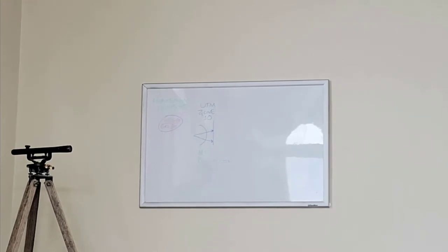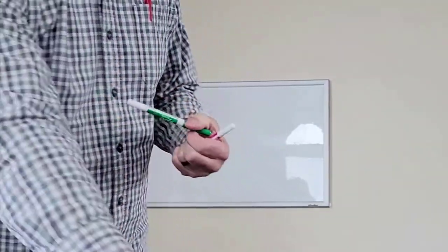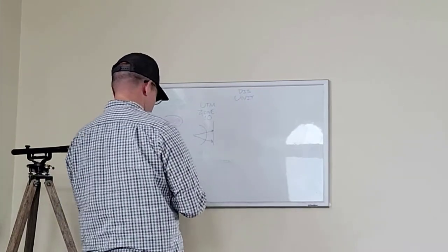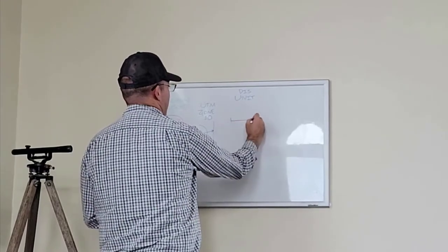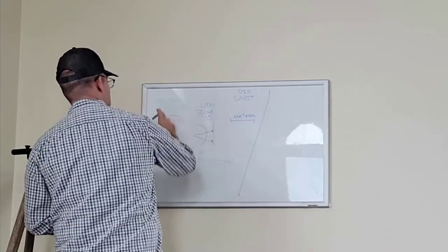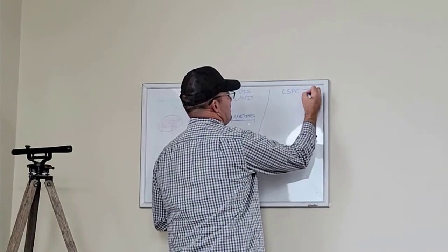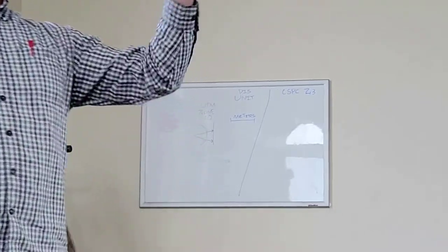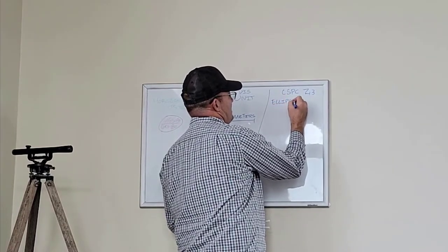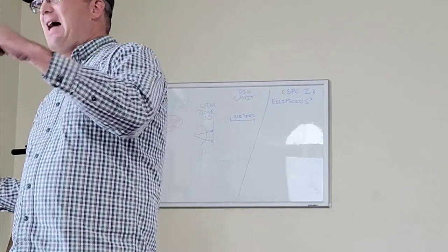So what QGIS is doing when it sees your image is in UTM Zone 10 — there's another part to this. You've also got to have some kind of distance unit. In UTM Zone 10, the distance unit is meters. Now QGIS knows you want to go from UTM Zone 10 to California State Plane Zone 3. It's got to do several different things to make that transformation. The first thing it asks is: are my ellipsoids the same?